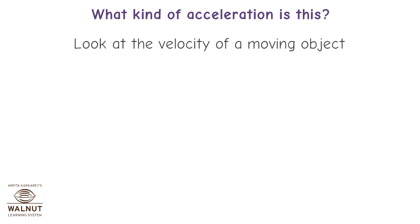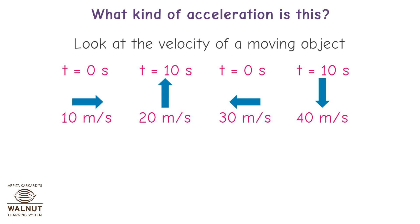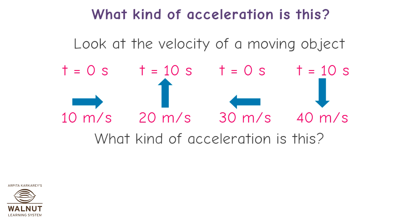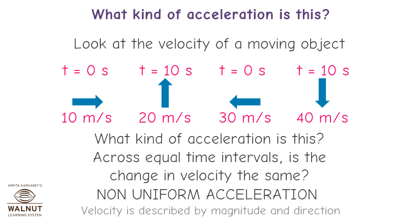Consider another moving object. When time is 0 s, speed is 10 m/s; when time is 10 s, speed is 20 m/s; at the next interval speed is 30 m/s; and then 40 m/s. Across equal time intervals, is the change in velocity the same? It is not — therefore, this is non-uniform acceleration.